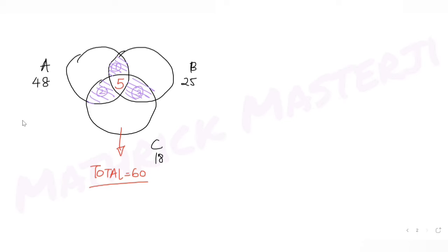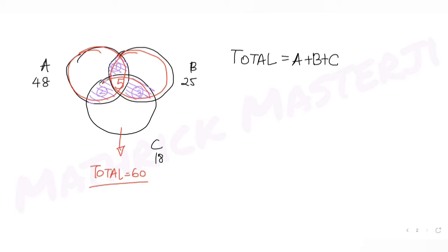Let's develop the formula. Total means the sum of all regions in all three circles, which equals A plus B plus C. When you add the three full circles, each of the exactly-two regions gets counted twice, and the all-three region gets counted three times. Since every region should be counted only once, we subtract the exactly-two regions once and subtract the all-three region two times.